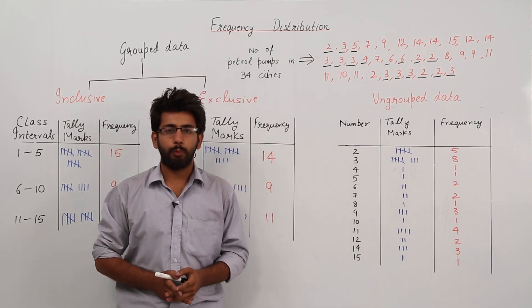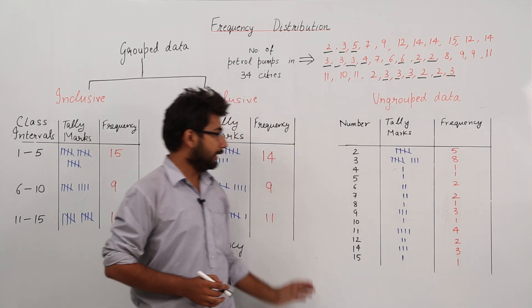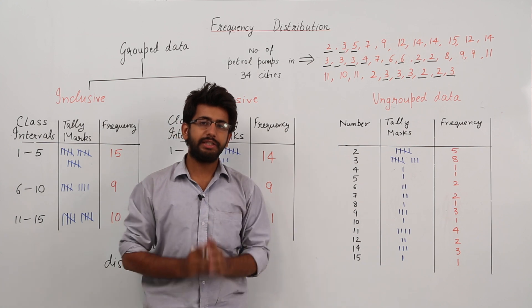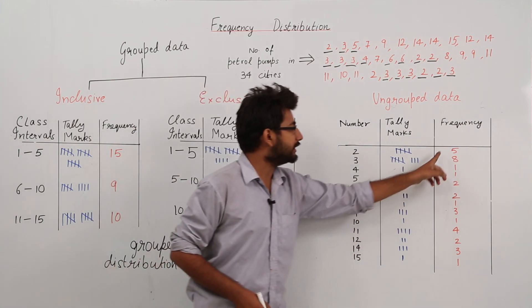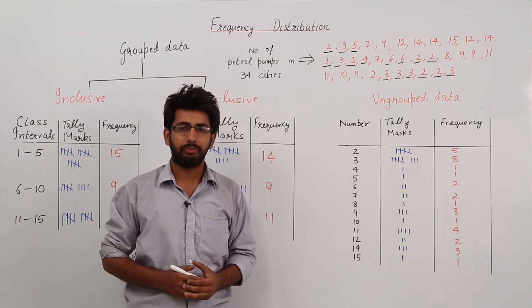Now in the previous section we learned about ungrouped data, and this table is related to ungrouped data. In this table we have written the frequency of each and every element which is present in the data.